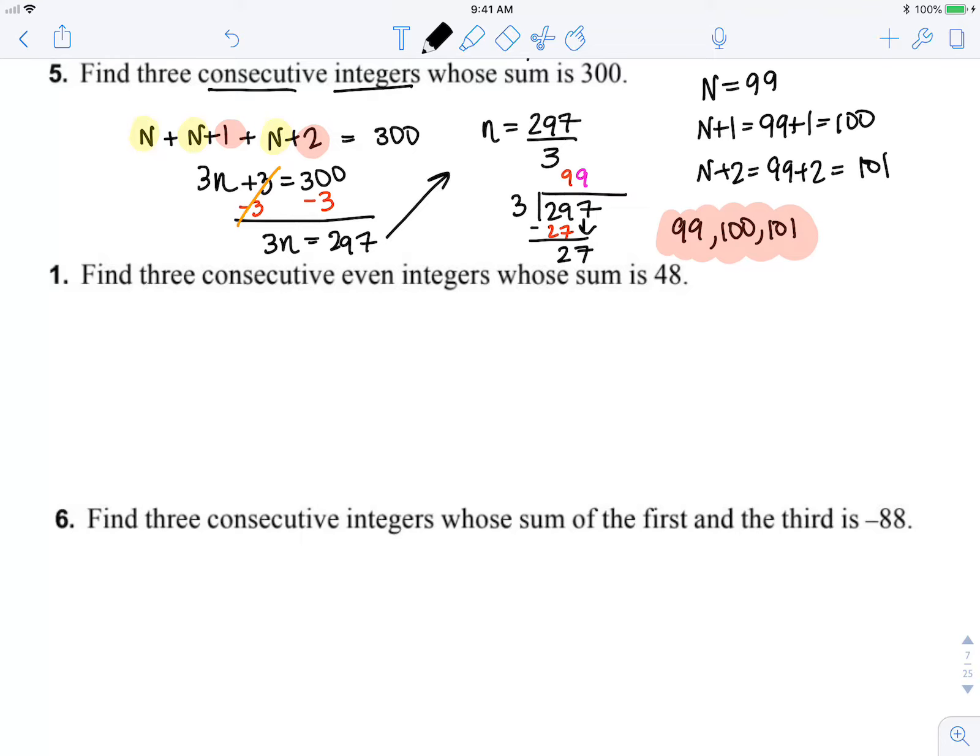Now we want to find three consecutive even integers whose sum is 48. So remember, even integers are two apart from each other, so n plus n plus 2 plus n plus 4 equals 48. So now I'm going to...